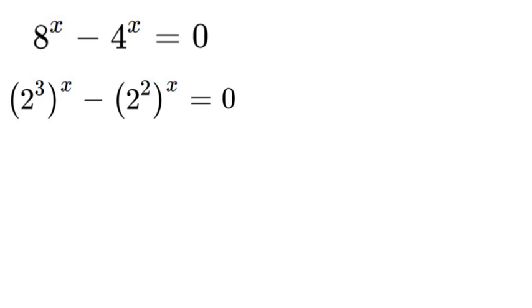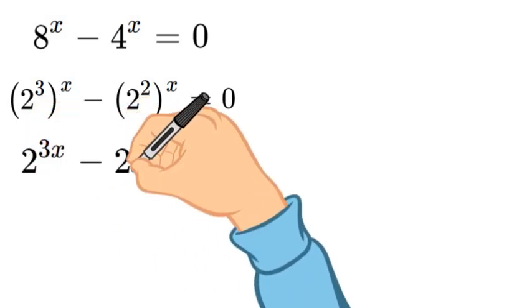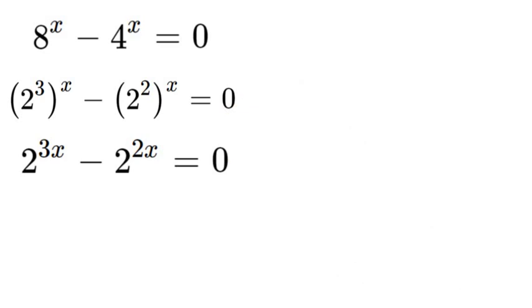Now using power properties, when 2 to the third is to the power of another number, that power is multiplied to 3. So we can rewrite again: we have 2 to the 3x minus 2 to the 2x which equals 0.